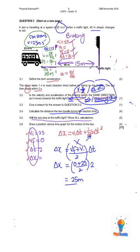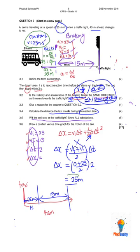Looking at the sketch again, this was the taxi's starting point and the total distance to the traffic light was 40 meters. In the first one second he already covered 25 meters. So if he wants to stop in time, he needs to stop within 15 meters. But we calculated that his final velocity only reaches zero after 25 meters — so that's 15 plus another 10 meters. He would only stop 10 meters past the traffic light. So no, he will not stop in time. He will not stop at the traffic light.